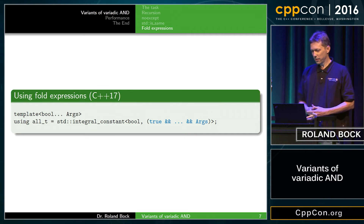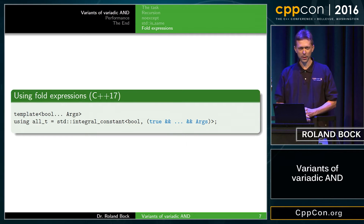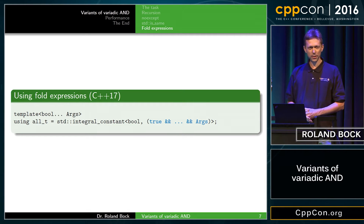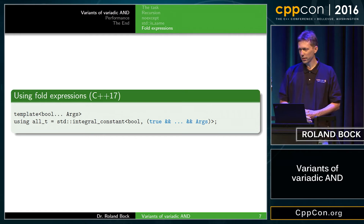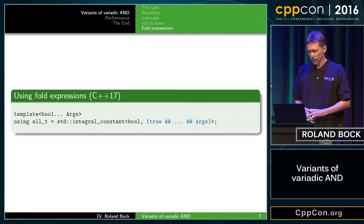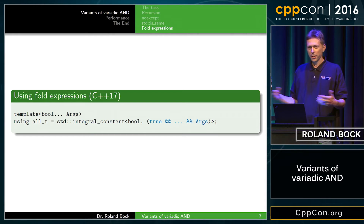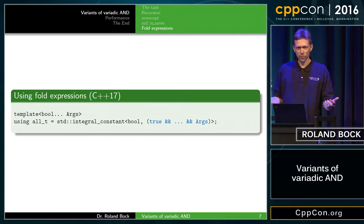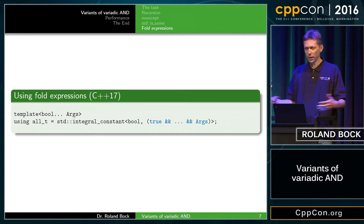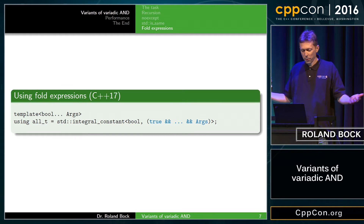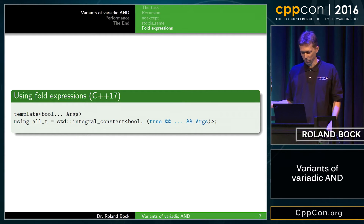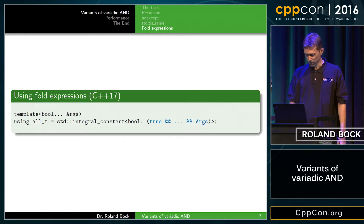In C++17, everything gets nicer and easier because we will have fold expressions. With fold expressions, you can just express exactly what we want: combine all our arguments with AND, and if the result is true, that's the result we want. So that's very expressive.